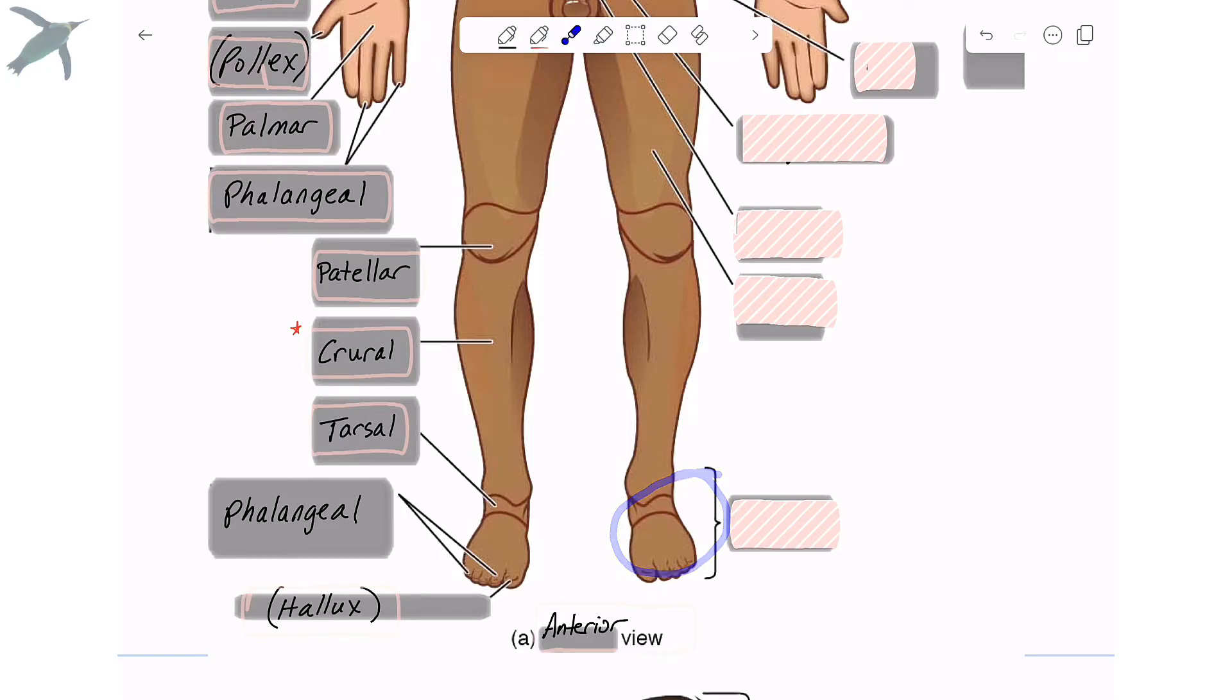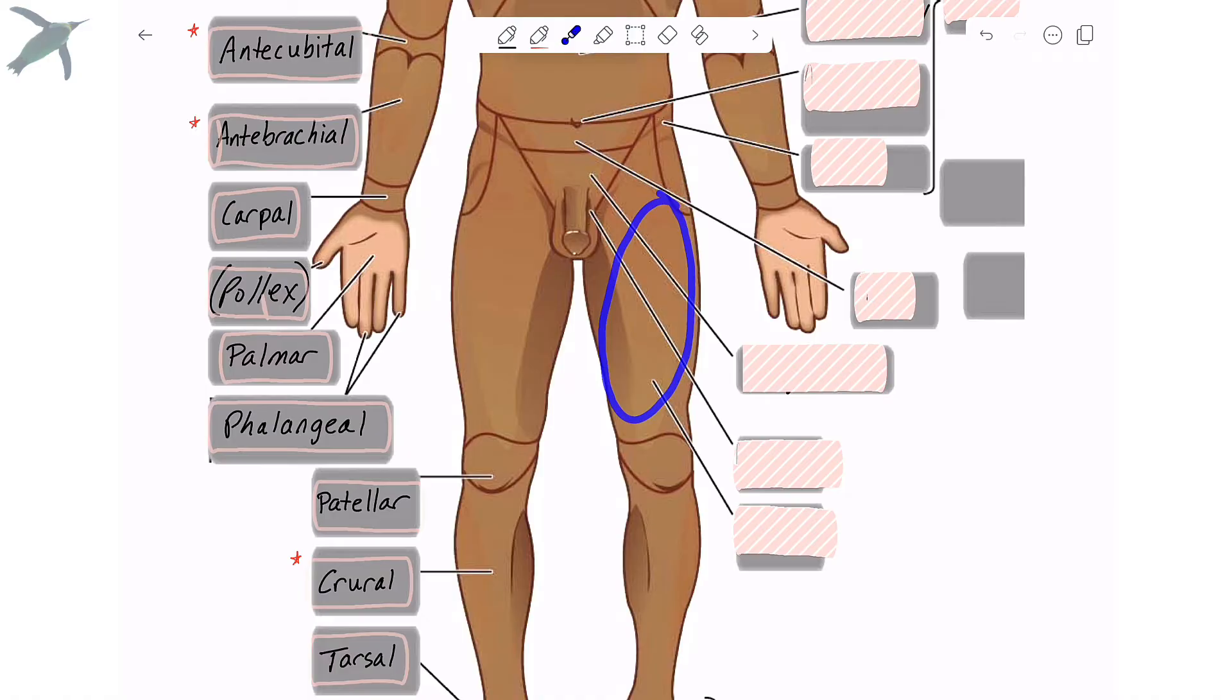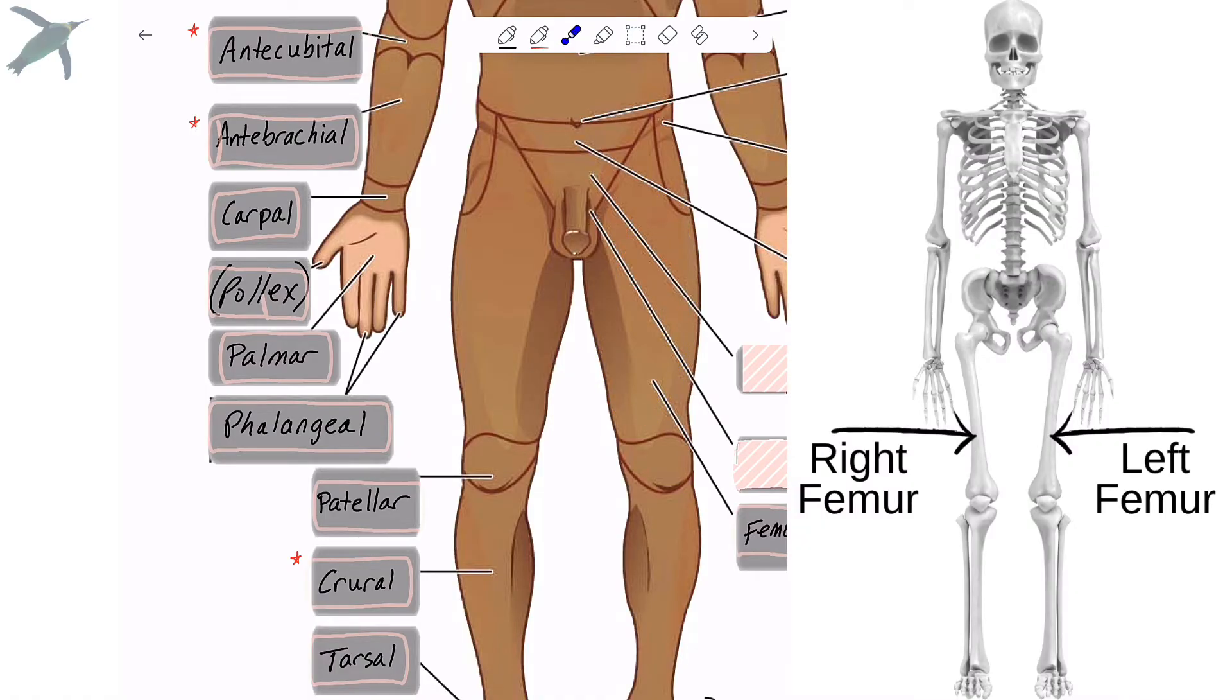The foot region, altogether, we refer to as pedal. The front of the thigh is referred to as the femoral region. And of course, the femur is the bone you find there.